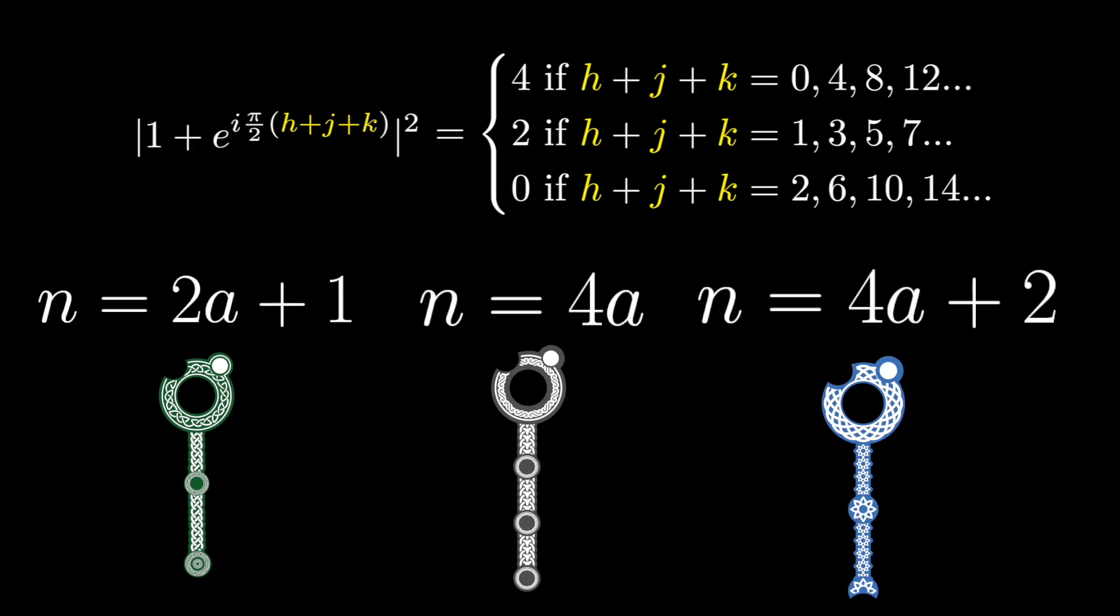Now we can see the connection between the structure factor of the diamond lattice and the Collatz conjecture. In both cases, we end up classifying the numbers into the same three families. Odd numbers, multiples of 4, and even numbers that aren't multiples of 4. Now, admittedly, this could be a coincidence. But maybe it isn't.